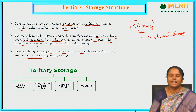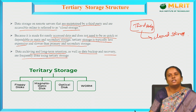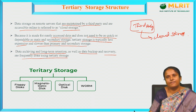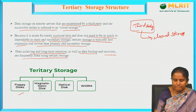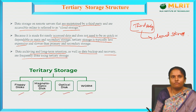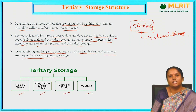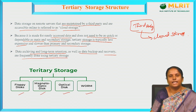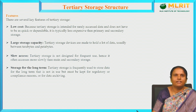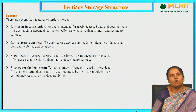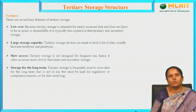Tertiary storage types include floppy disk, magnetic optical disk, optical disk, and WORM. There are several key features of tertiary storage: low cost, large storage capacity, slow access, and suitability for long-term storage.